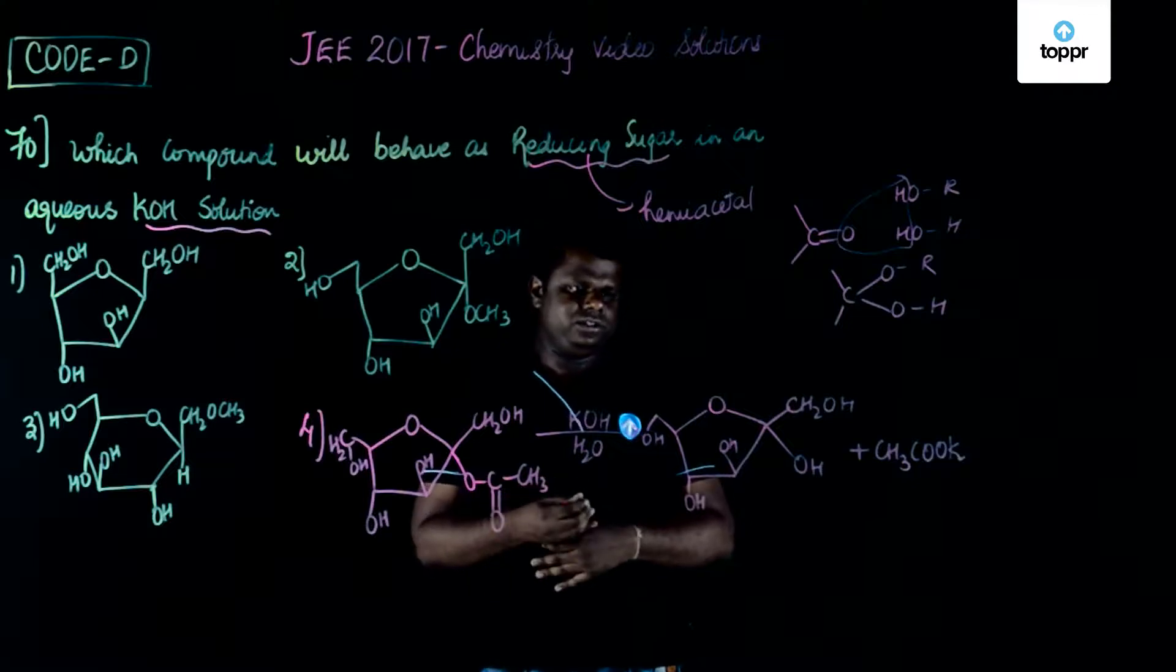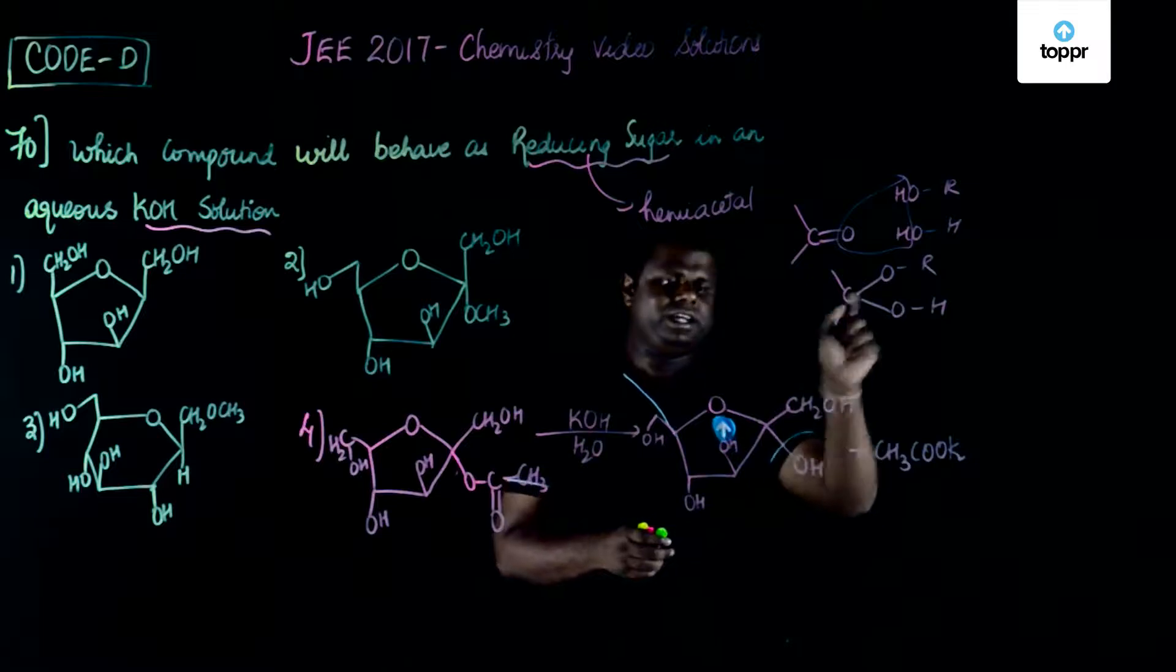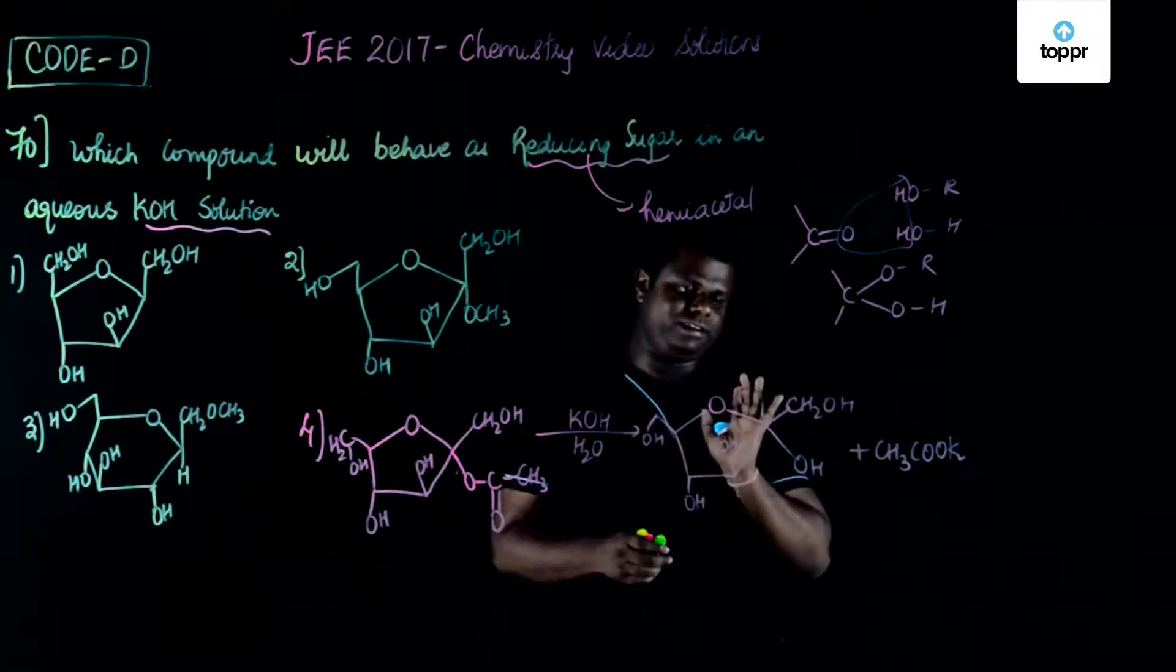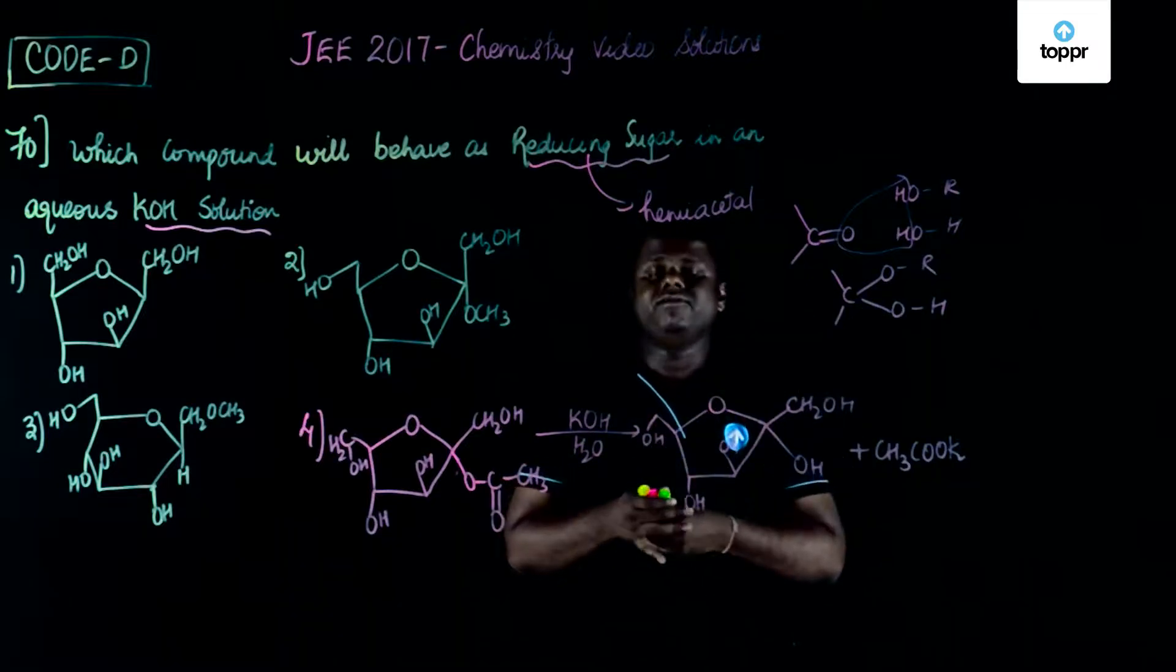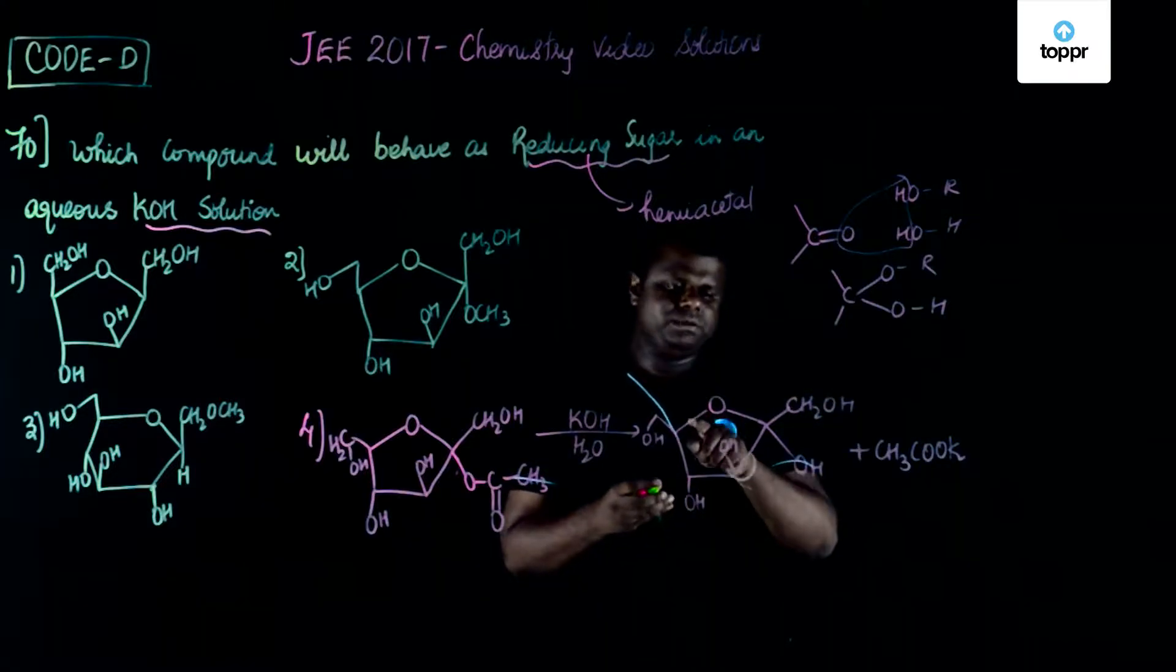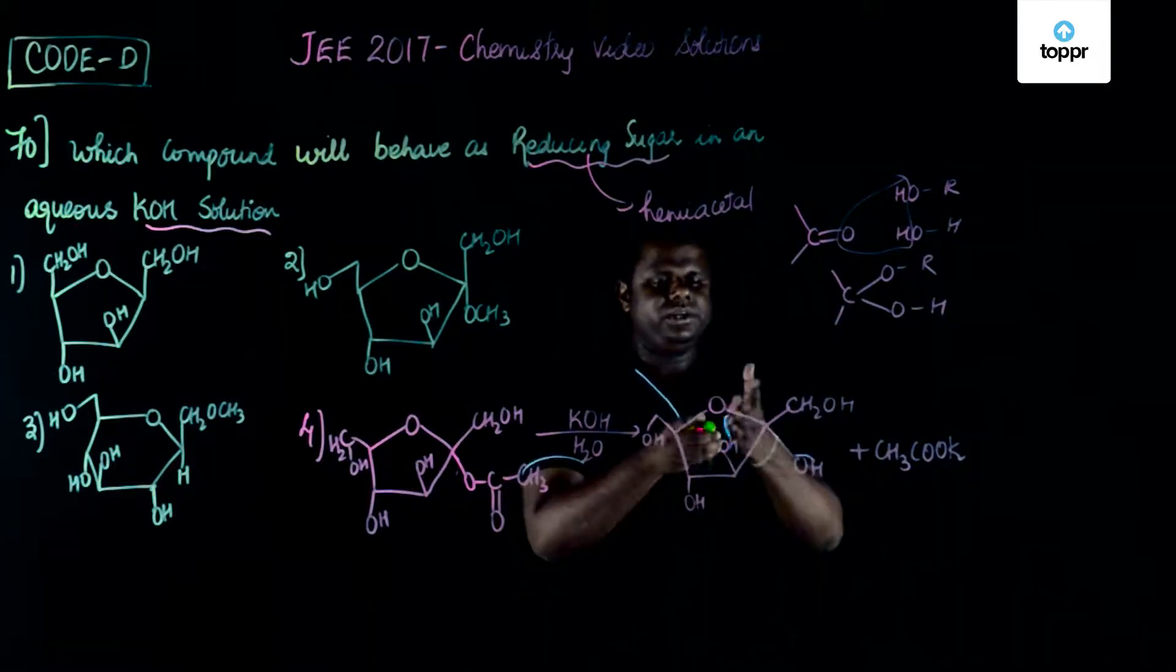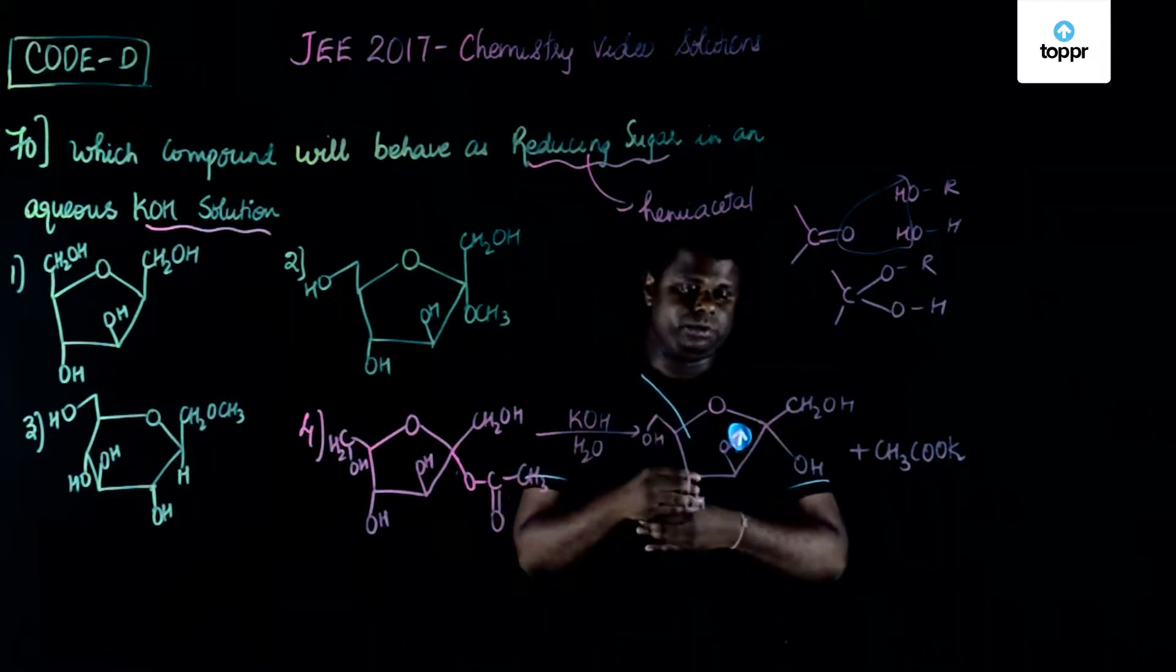If you could see here, there is an OH group and there is an OR group. This hemiacetal will make it something like a reducing sugar. How exactly could that be possible? If this bond breaks and this hydrogen transfers here, you could get something like a carbonyl group.